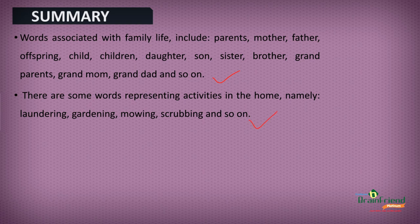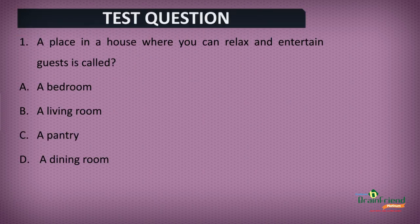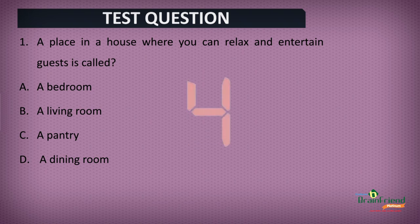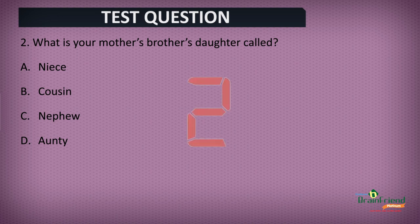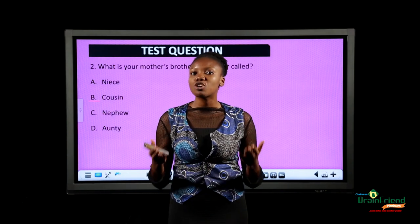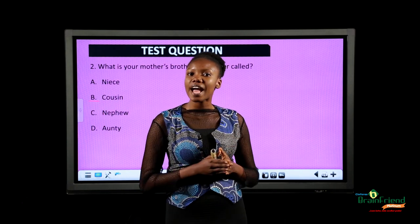Now let's answer some test questions. Question one: a place in a house where you can relax and entertain guests is called — A, a bedroom; B, a living room; C, a pantry; or D, a dining room. The correct answer is B, a living room. Question two: what is your mother's brother's daughter called? A, a niece; B, a cousin; C, a nephew; or D, an auntie? The correct answer is B, a cousin. I'm sure with these, you can communicate better while talking about things relating to family life and home.